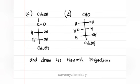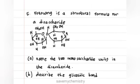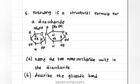Which of the following compounds are D monosaccharides and which are L monosaccharides? And draw its Haworth projection. Following is a structural formula of a disaccharide. Part A, name of two monosaccharide units in the disaccharide. Part B, describe the glycosidic bond.